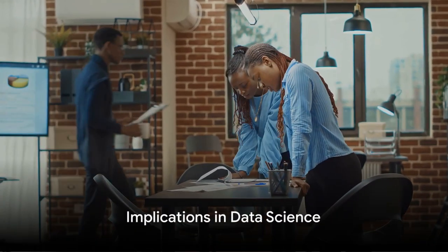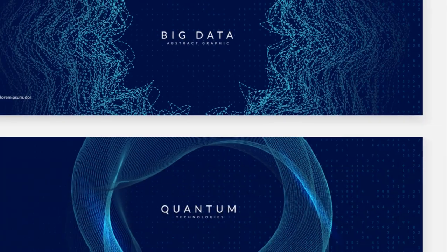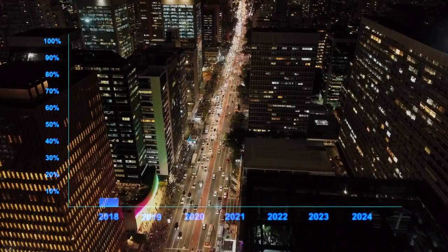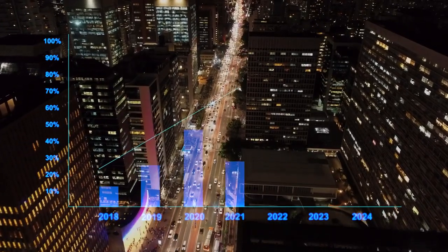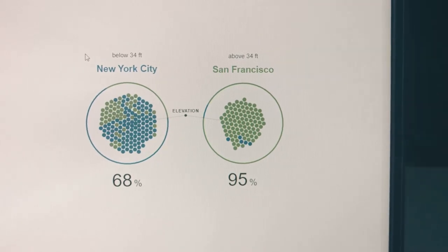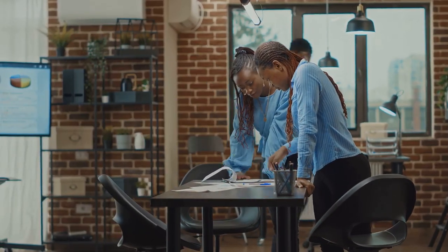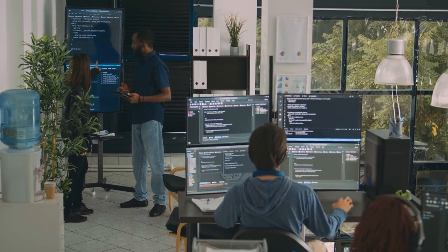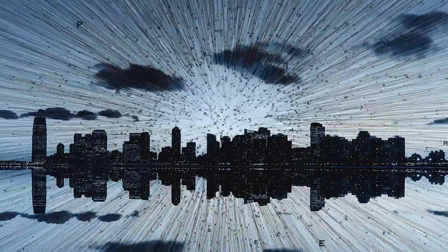Now, this isn't just about creating a balanced orchestra or producing a new piece of art. This technique has profound implications in the field of data science. Imbalanced data sets can skew the results of data analysis, leading to biased and inaccurate models. By using SMOT, we can create a more balanced data set and thus more reliable and accurate models.